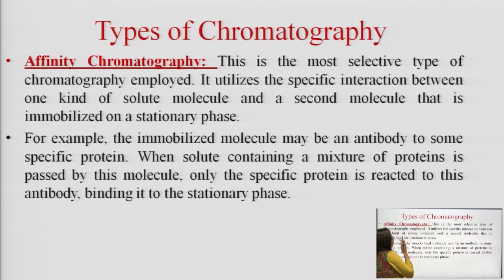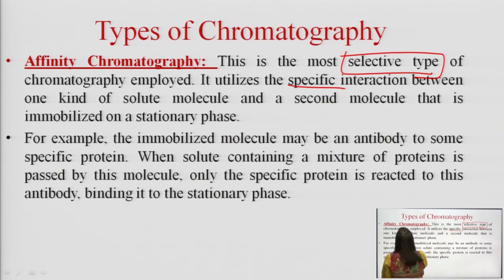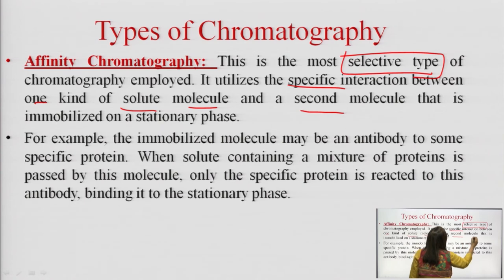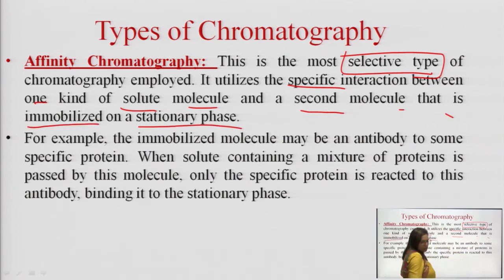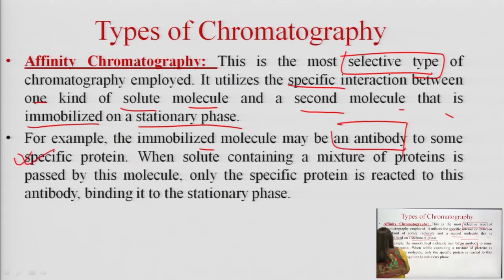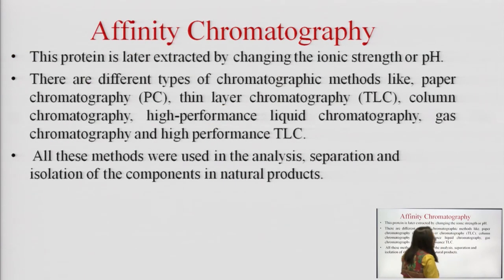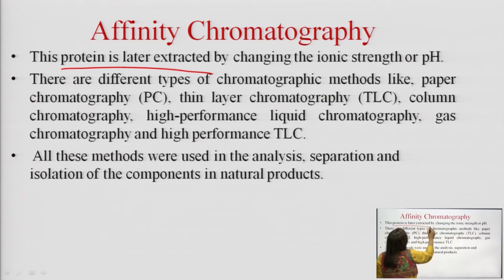Affinity chromatography is the most selective type, utilizing specific interactions between one kind of solute molecule and a second molecule immobilized on the stationary phase — for example, immobilization of an antibody to a specific protein. Only one very specific antibody can be separated from a mixture of molecules, making it highly selective. The protein is later extracted by changing the ionic strength or pH.